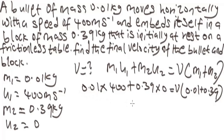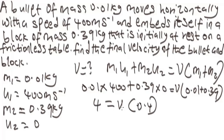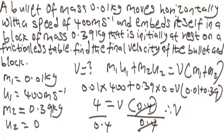When you work this out: 0.01 times 400 gives us 4, and 0.39 times 0 gives 0. So the left side is 4. Inside the bracket: 0.01 plus 0.39 gives 0.4. To make V the subject, divide both sides by 0.4. Therefore our V equals 4 divided by 0.4, which gives us 10. So the final velocity is 10 meters per second.